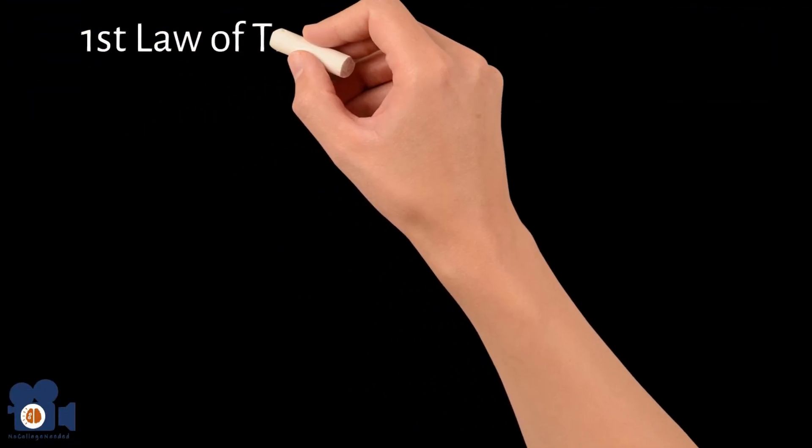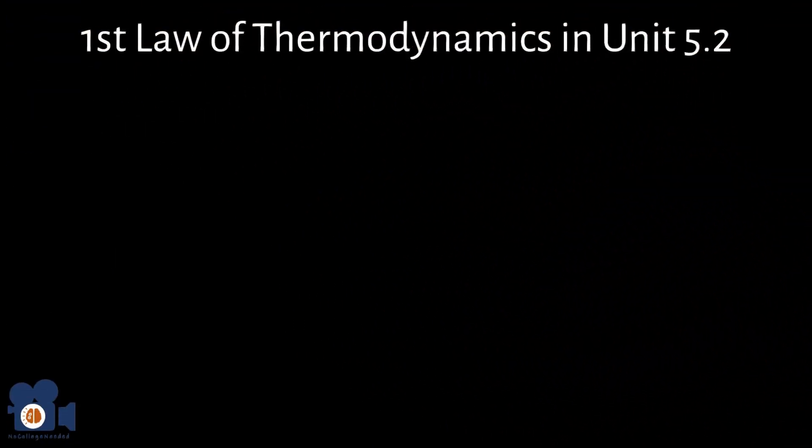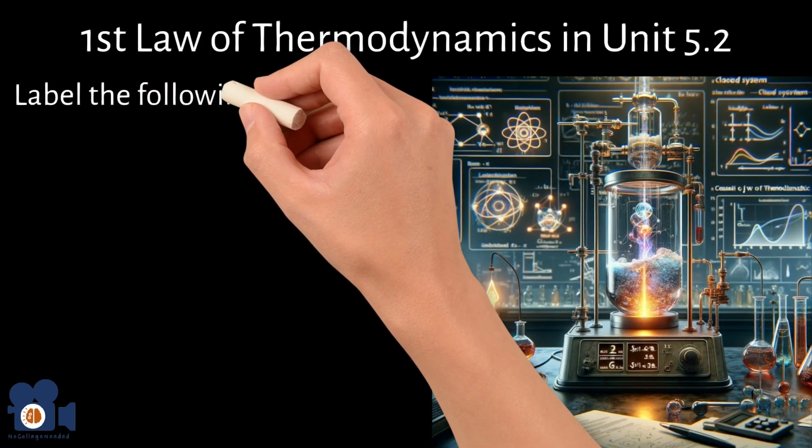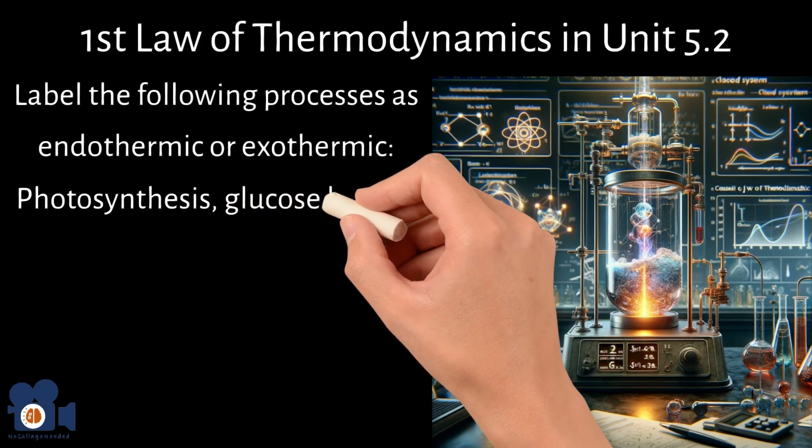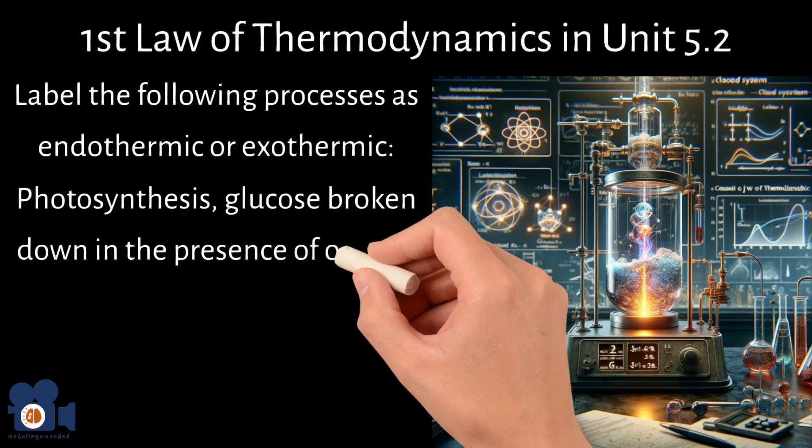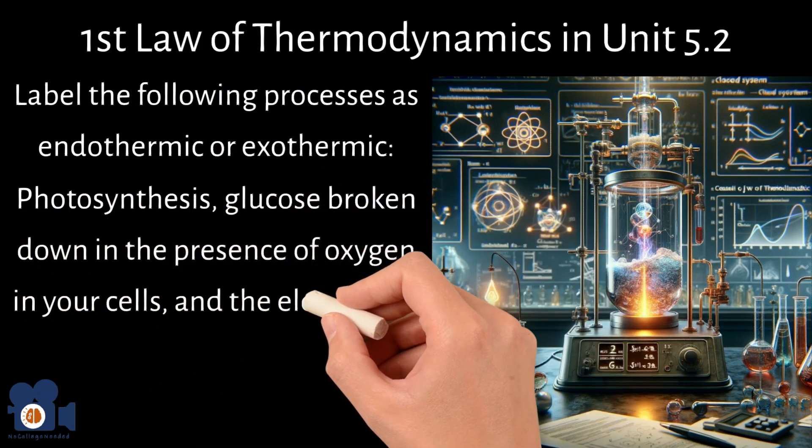With the first law of thermodynamics in unit 5.2, label the following processes as either endothermic or exothermic: photosynthesis, glucose being broken down in the presence of oxygen in your cells, and the electrolysis of water.